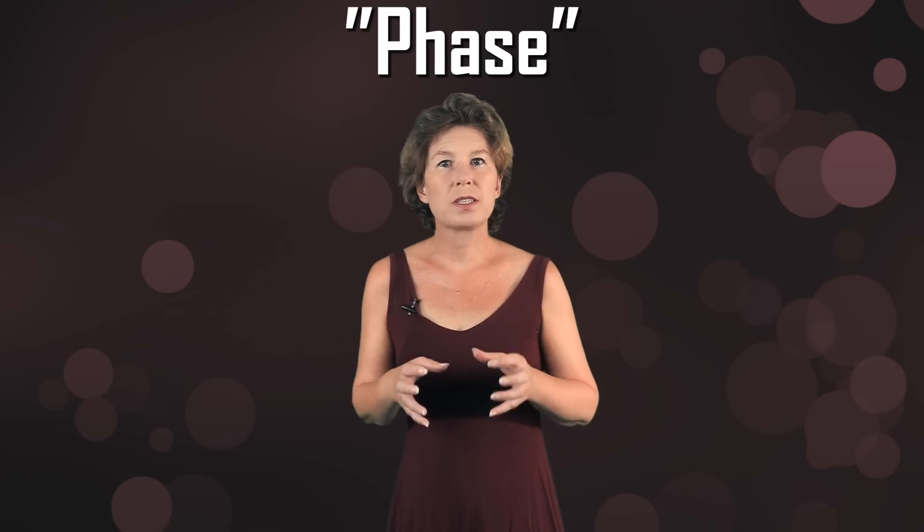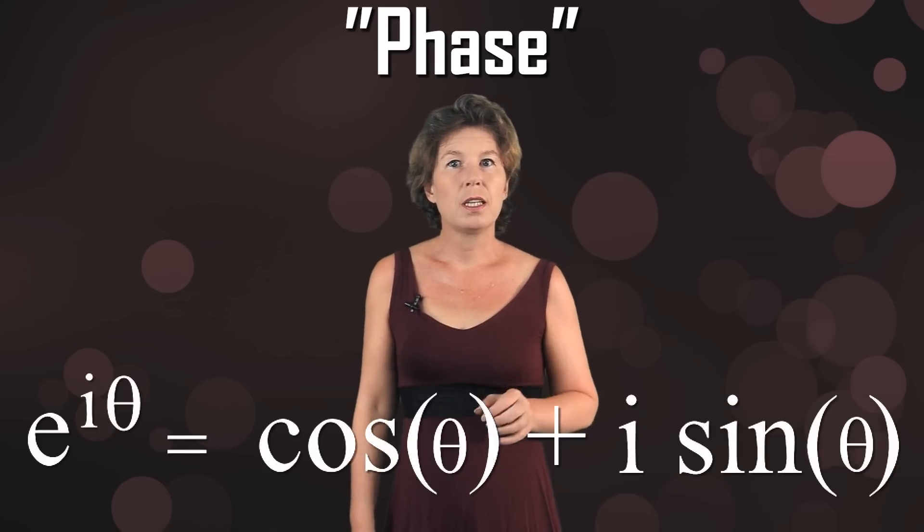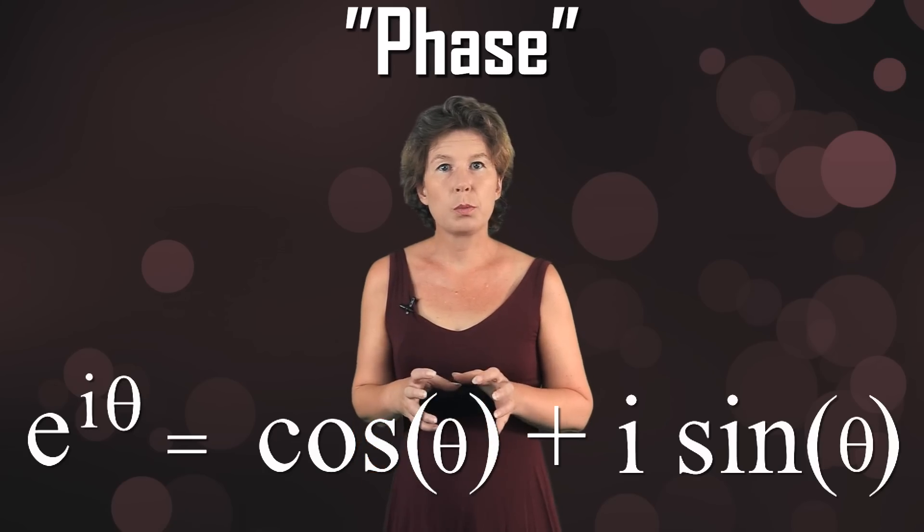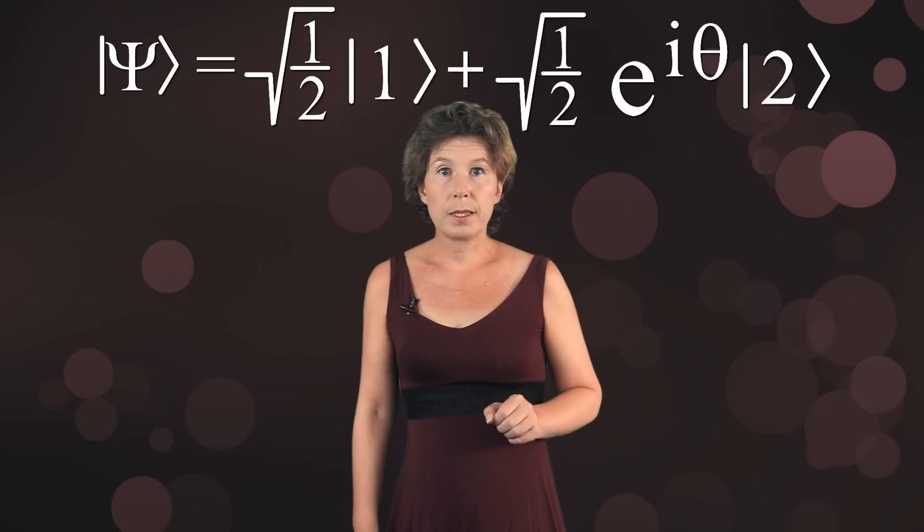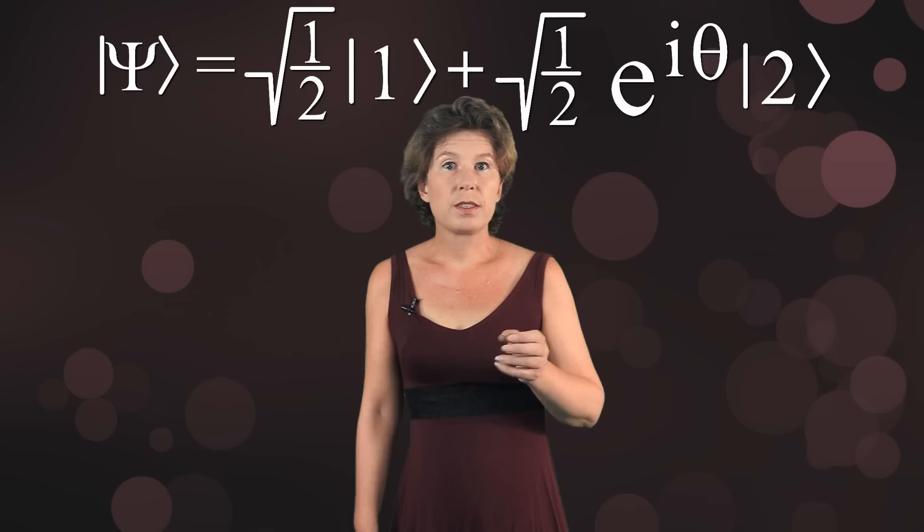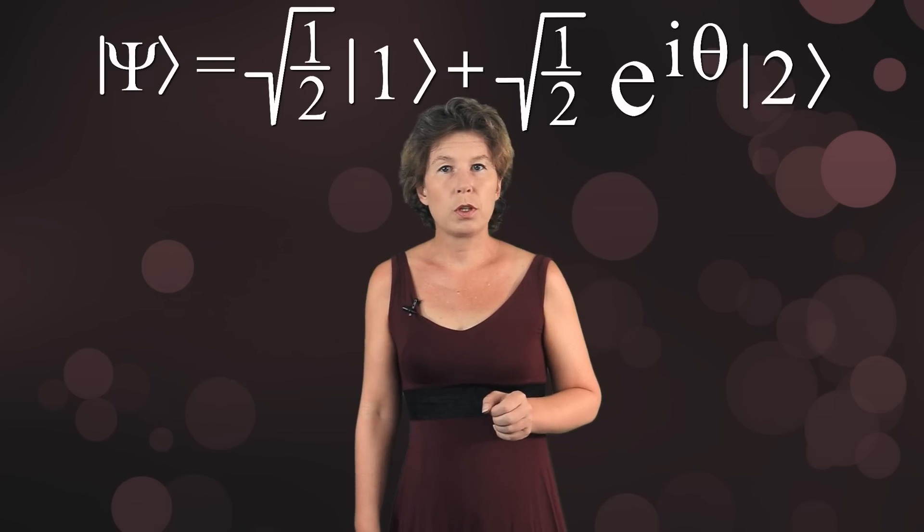This theta is also called the phase of the wavefunction because you can decompose the complex number into a sine and a cosine, and then it appears in the argument where a phase normally appears for an oscillation. There isn't anything oscillating here though, because there is no time dependence. You could put another such complex number in front of the other coefficient, but this does not change anything about the following.